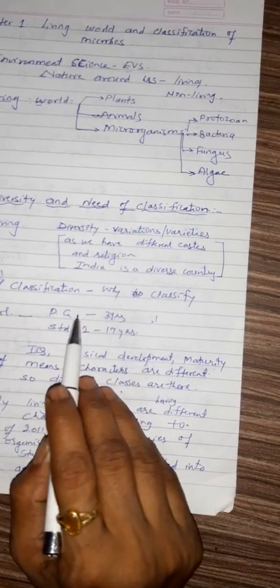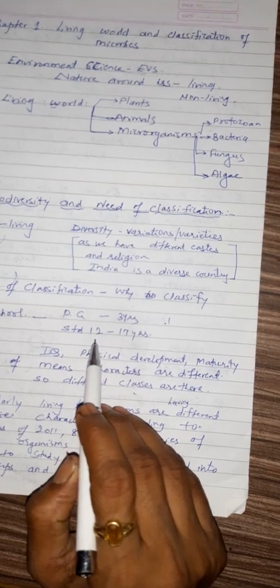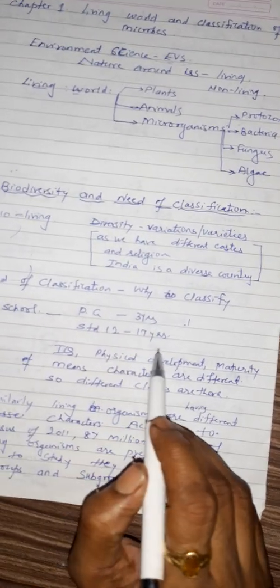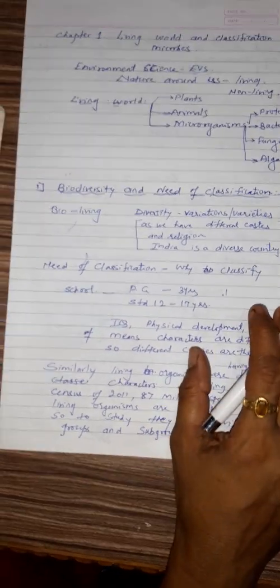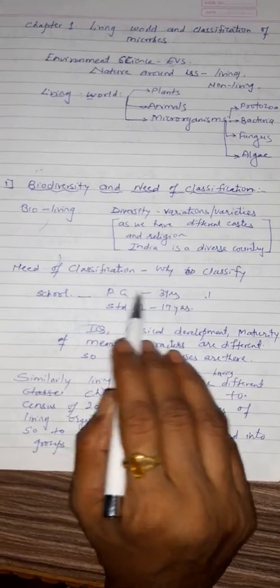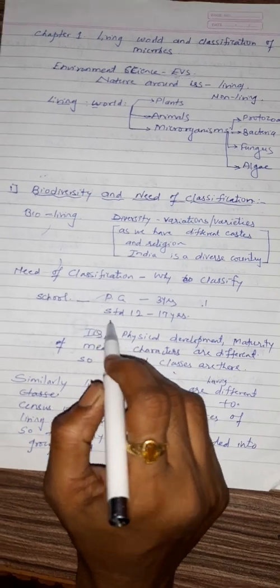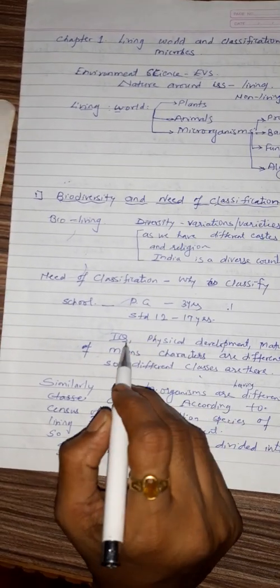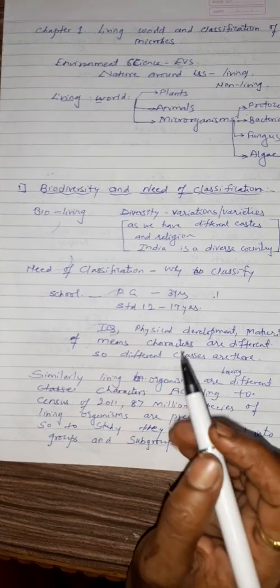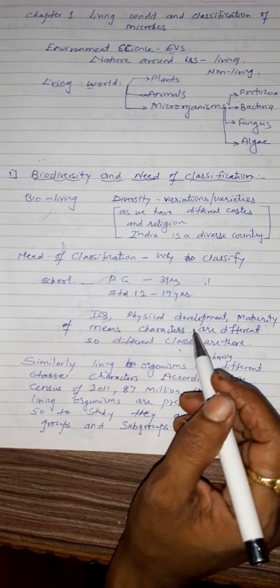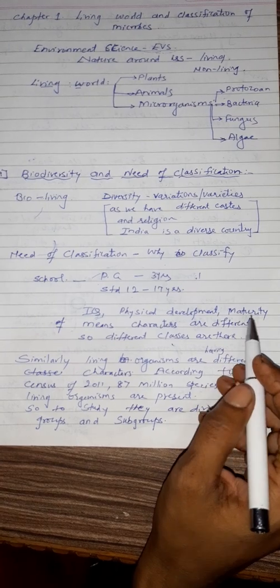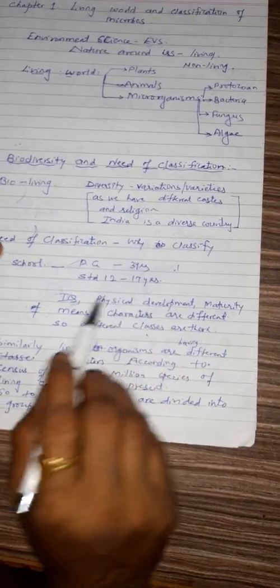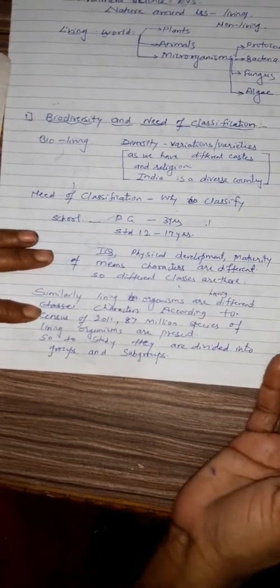In school there are different classes from playgroup to standard 12. Now age of playgroup student is of 3 years and the top 12 students it is of 17 years. Now why this class is there, playgroup, standard 1st, 2nd, 3rd, 4th? It is because each student is having different IQ means his understanding capacity is different, his physical development, his maturity, all that factors are different in each student. And so that classes are made according to their age.